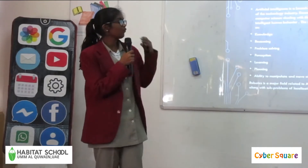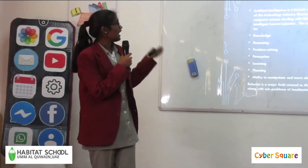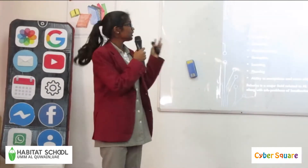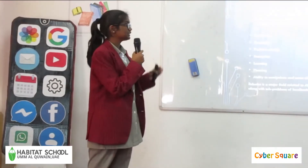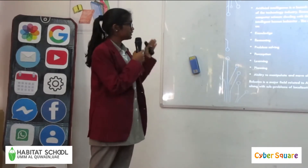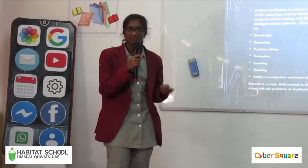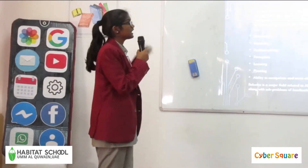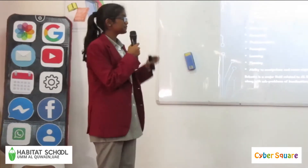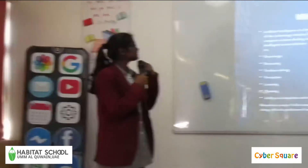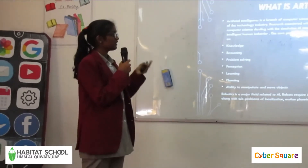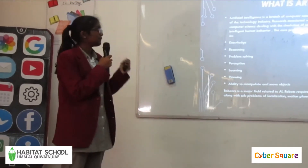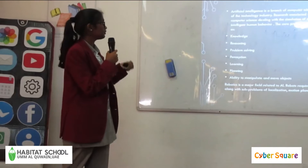So first of all, what is Artificial Intelligence? Artificial Intelligence is the branch of computer science that aims to create intelligent machines. It has become an essential part of the technology industry. Research associated with Artificial Intelligence is highly technical and specialized — it is a branch of computer science dealing with the stimulation of intelligent behavior in computers, and the capacity of machines to imitate human behavior.